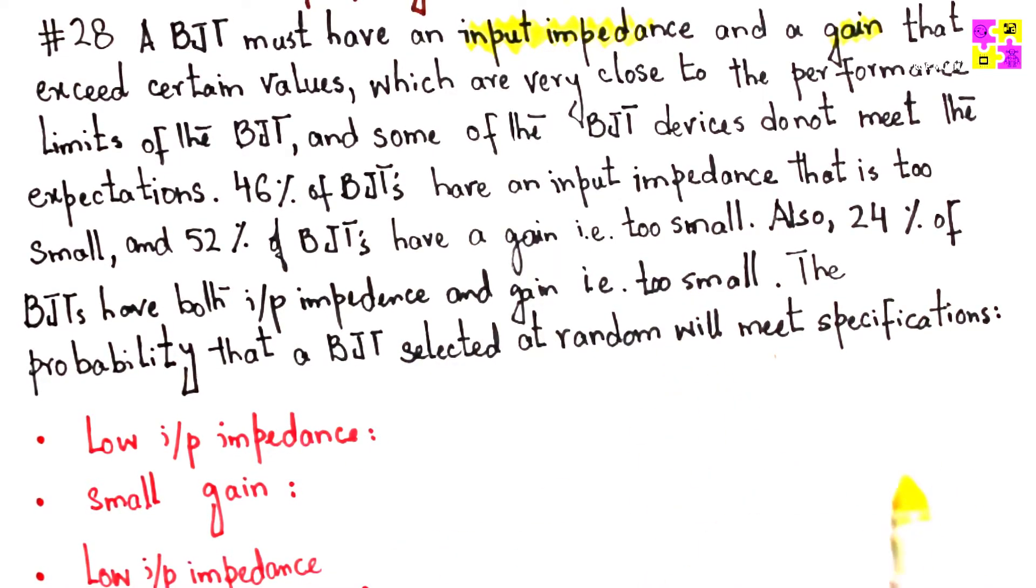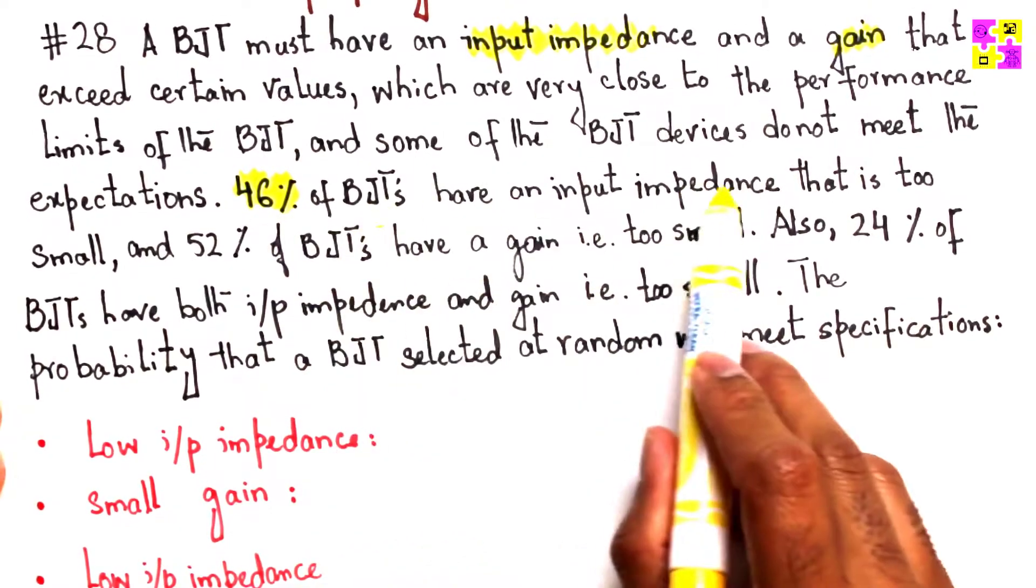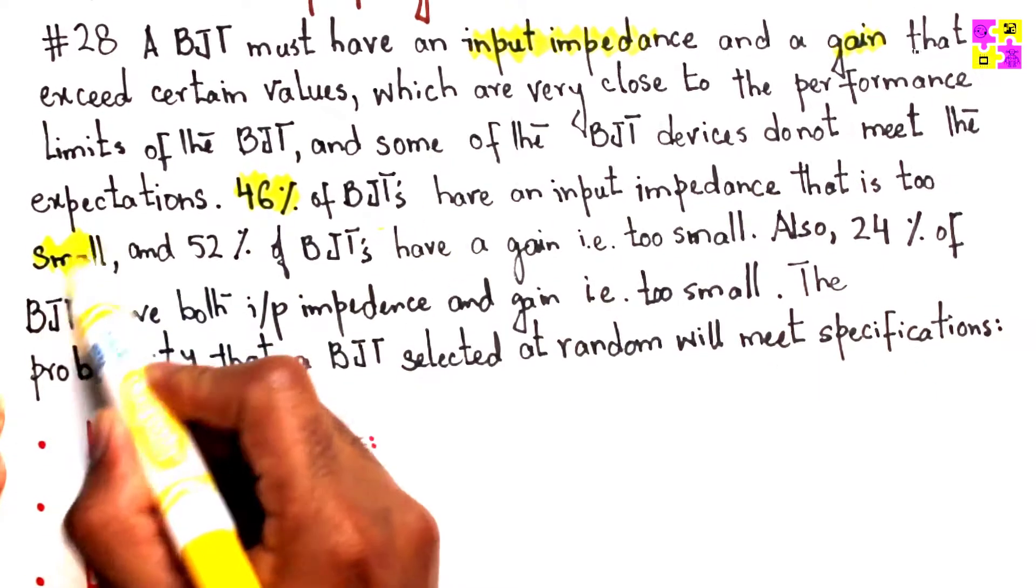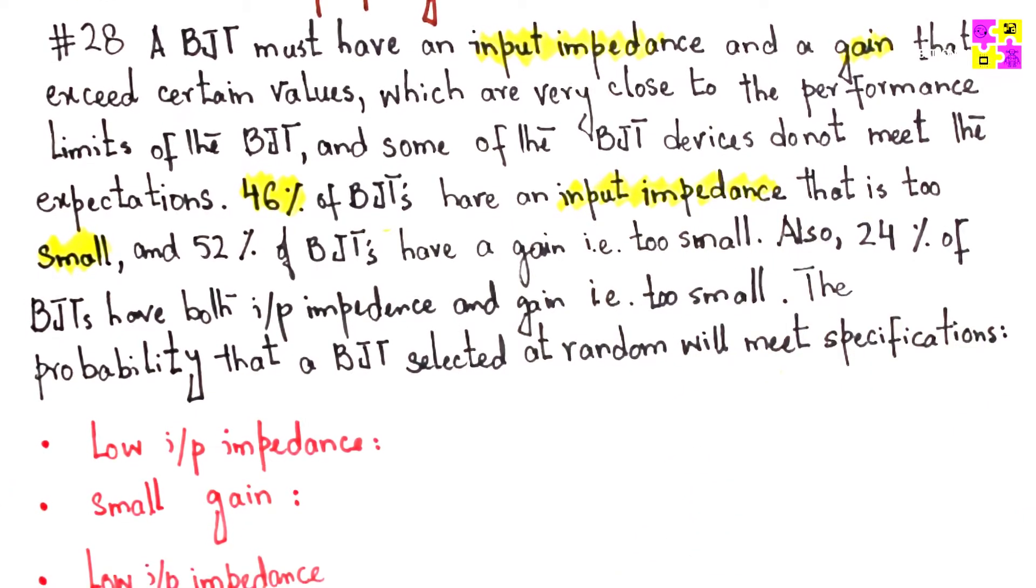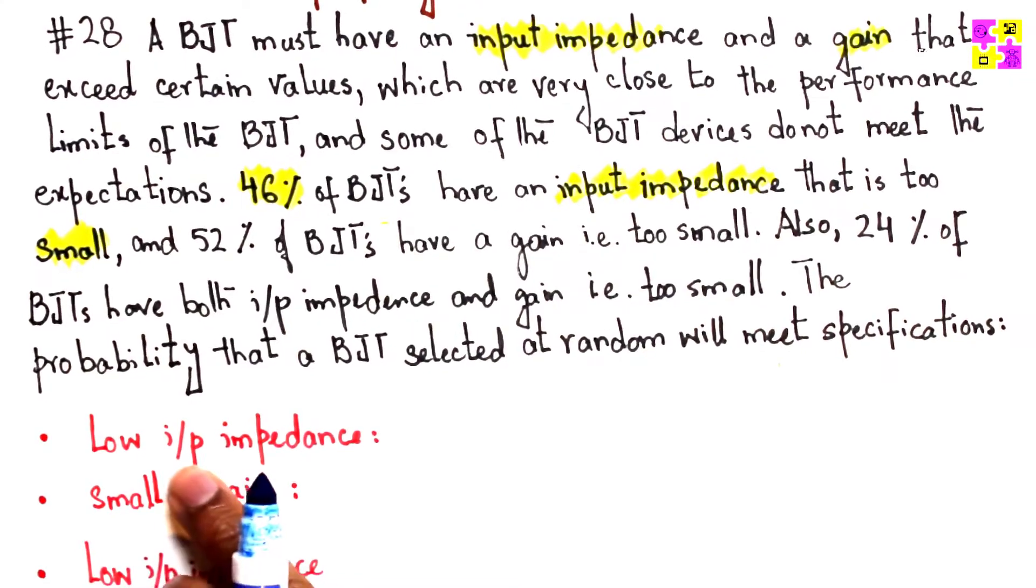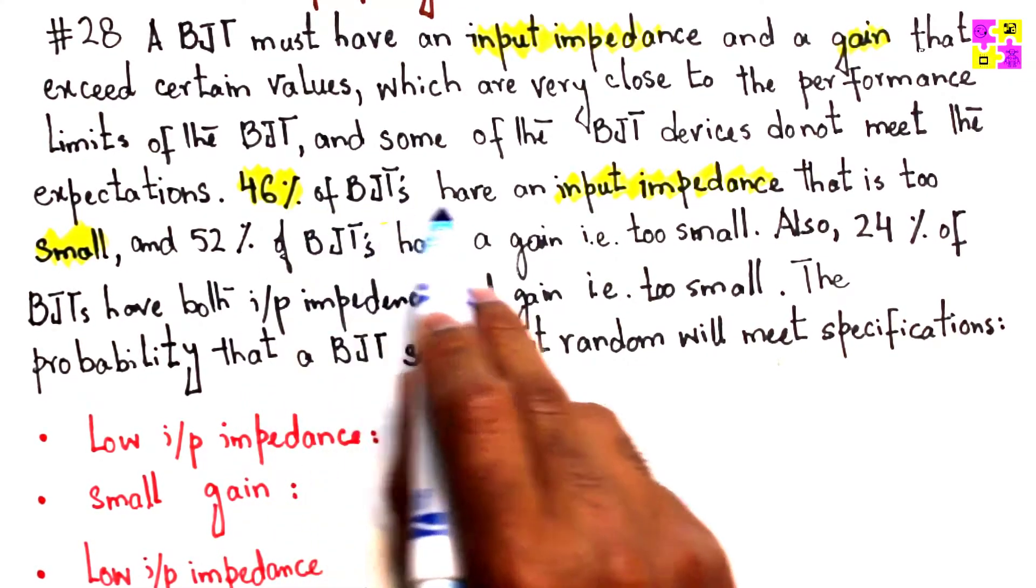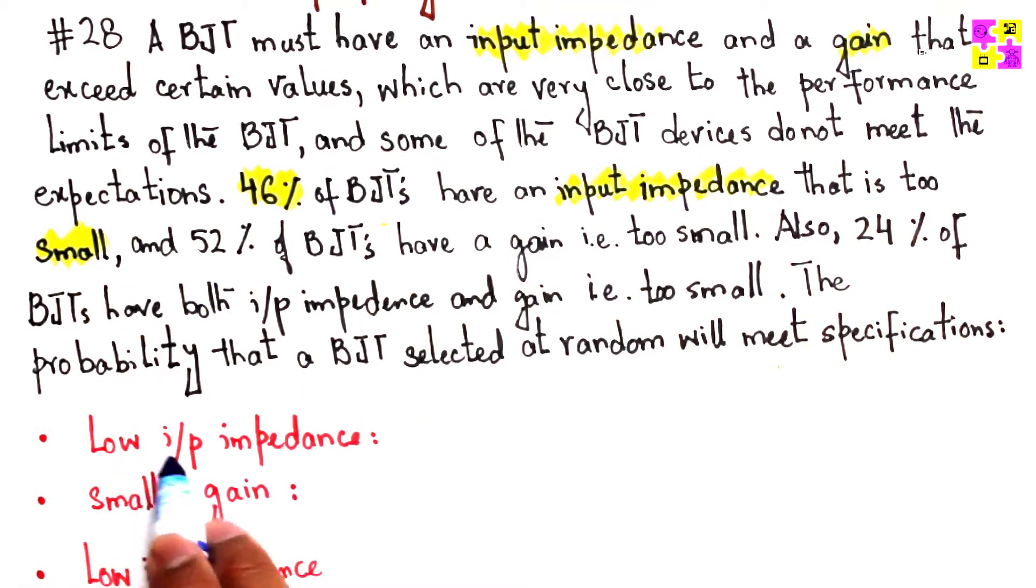What are those numbers? 46% of BJTs have an input impedance that is too small. I'm going to break it down so it's easier for us. Low input impedance: 46%.